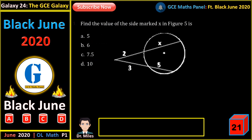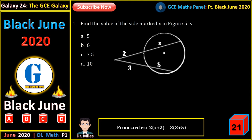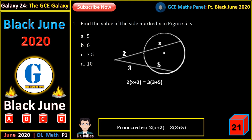Find the value of the side marked X. From circle theorems, 2 times the total length outside equals 3 times that total length. This gives us the equation: 2x plus 4 equals 24. When we solve for X, we have 10.